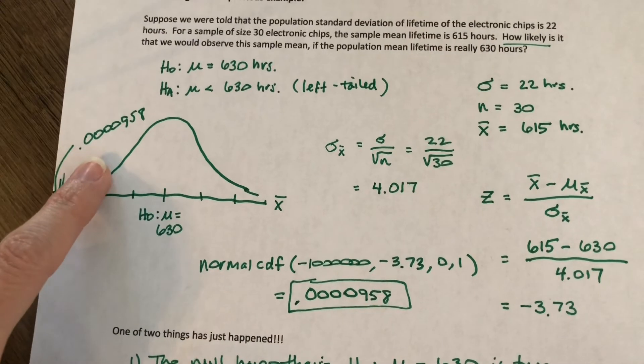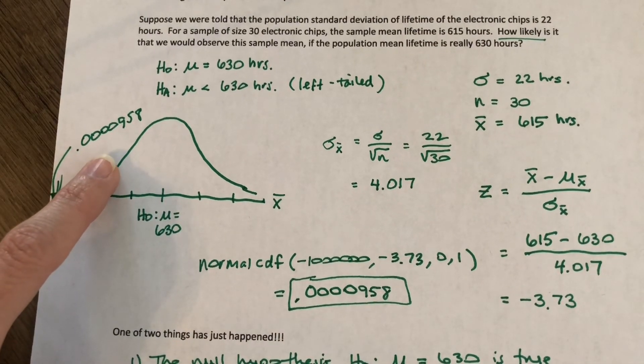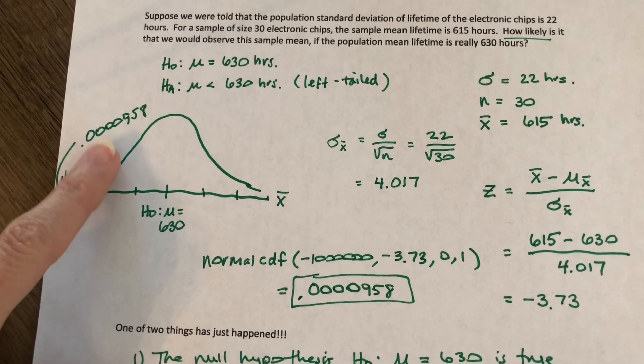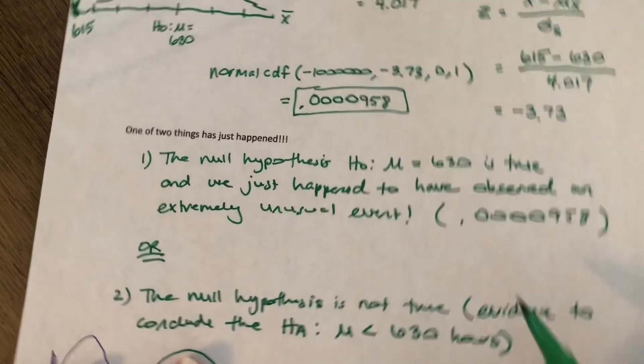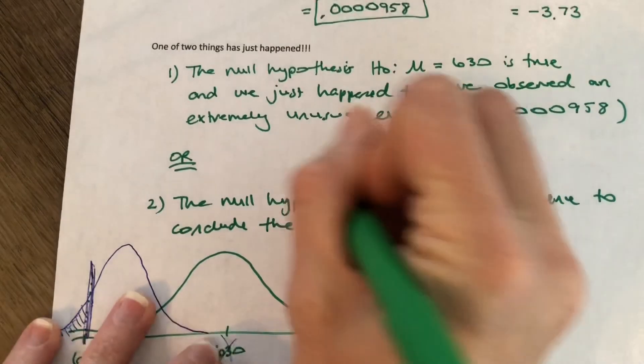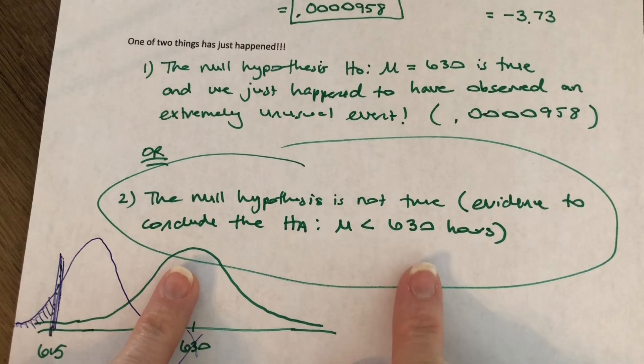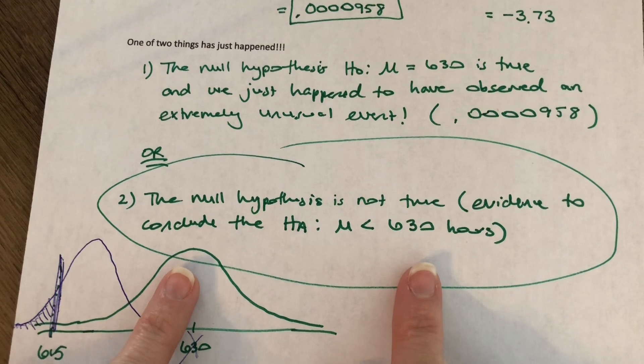And so that's the basic logic of hypothesis testing. If this probability, we call it a p-value, we'll talk more about that soon, if this probability or this p-value is very small, it tends to indicate that that null hypothesis is not true, and in fact, the alternative is true. We'll talk more about that soon.